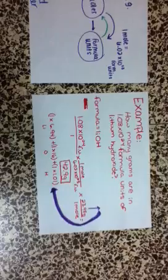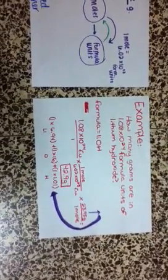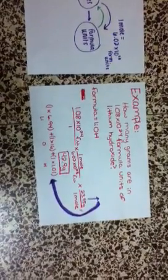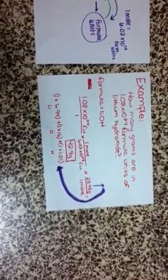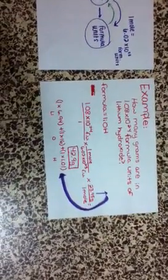So the formula is LiOH and then you start off by using 1.08 times 10 to the 24th formula units over 1, times 1 mole over 6.02 times 10 to the 23rd formula units, and then times 23.95 grams over 1 mole. And you get 23.95 by adding 1 times 6.94 plus 1 times 16 plus 1 times 1.01.